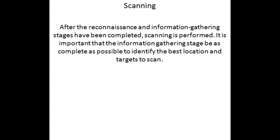Scanning is the first phase of active hacking and is used to locate target systems or networks for a later attack. Enumeration is the following step: scanning is complete and is used to identify computer names, usernames, and shares. Scanning and enumeration are discussed together because many hacking tools perform both steps simultaneously. After the reconnaissance and information gathering stages have been completed, scanning is performed. It is important that the information gathering stage be as complete as possible to identify the best locations and targets to scan. During scanning, the hacker continues to gather information regarding the network and its individual host systems.